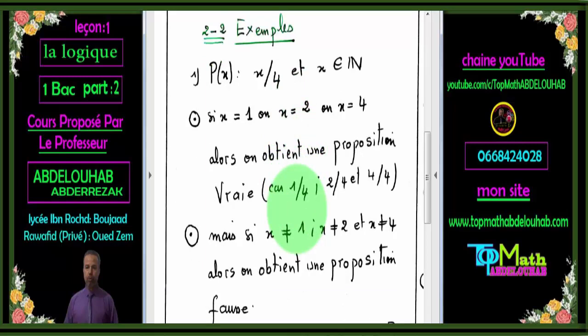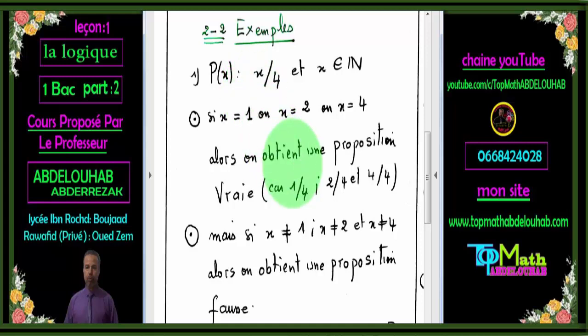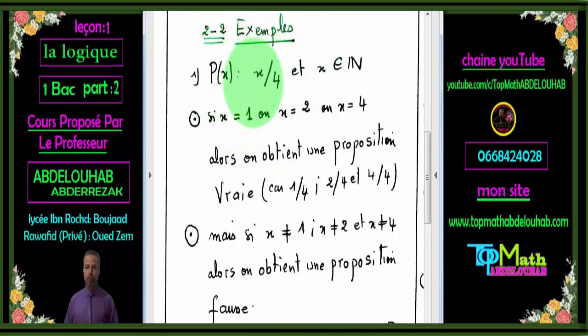Pour une proposition, on peut directement confirmer si son sens est vrai ou faux. Par contre, pour la fonction propositionnelle, on ne peut déterminer le sens de son énoncé mathématique que si on remplace x par des valeurs — le sens peut être vrai pour certaines valeurs et faux pour certaines valeurs, comme je l'ai expliqué à travers ce petit exemple.